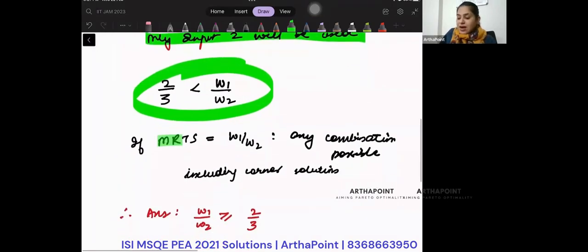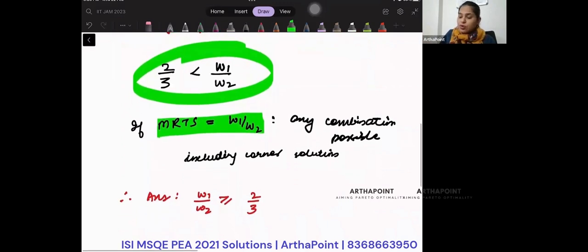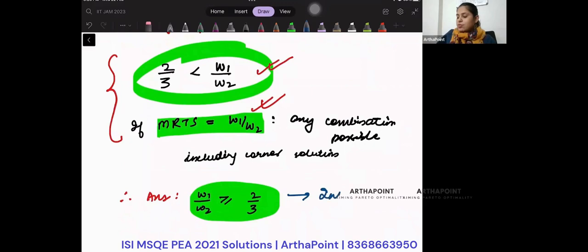But when MRTS equals the price ratio, I can also use only input 2, right? So when can I use input 2? Either in the less than condition or in the equal condition. If I combine these two together, as long as the price ratio is greater than or equal to MRTS, I will use input 2, that is, I will use y.